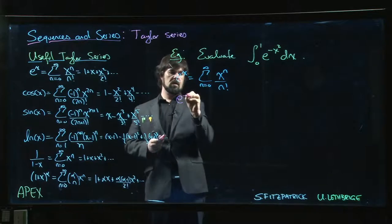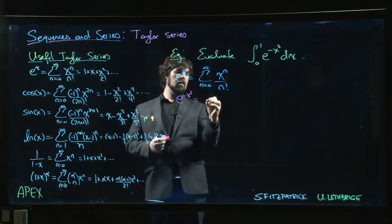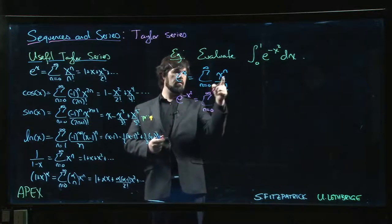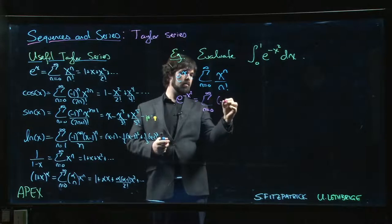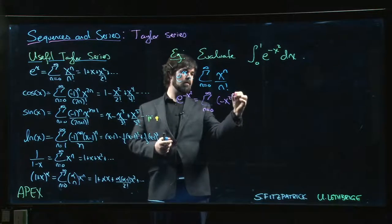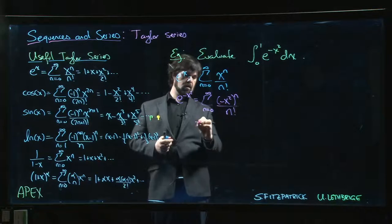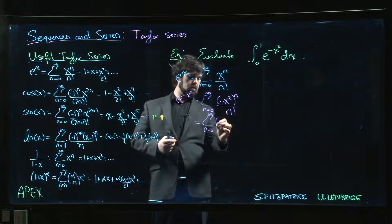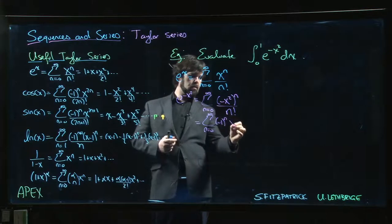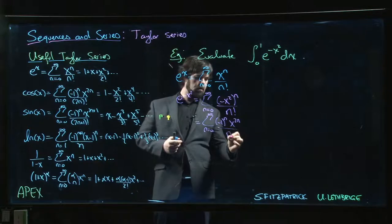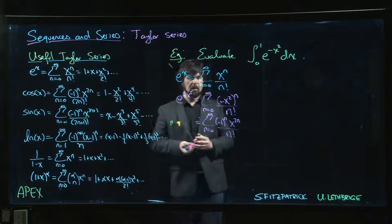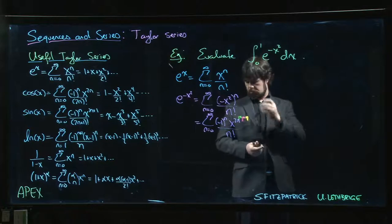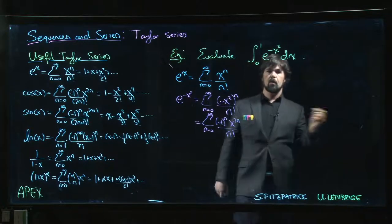So if I want to do e to the minus x squared, replace x by minus x squared. And we can clean that up a little bit. There's my power series.